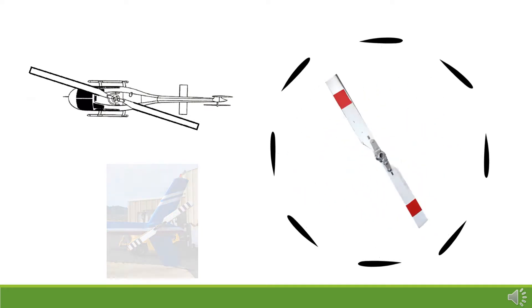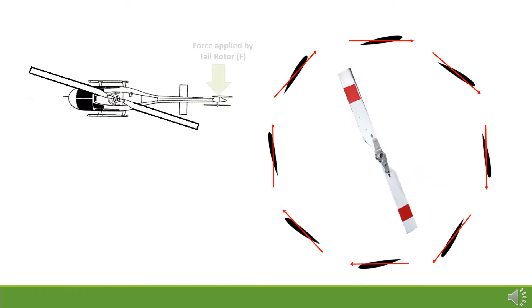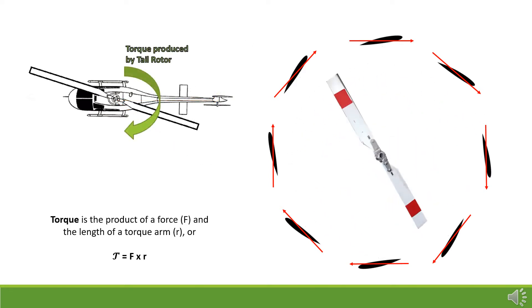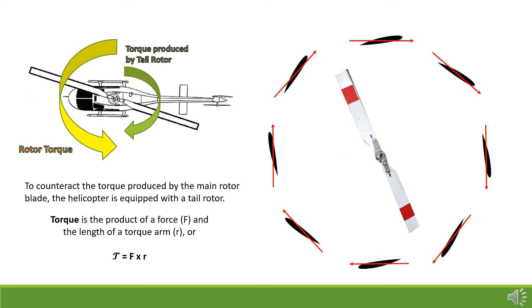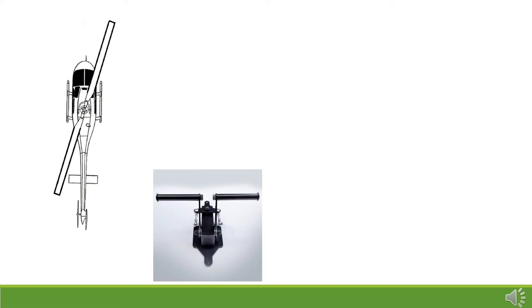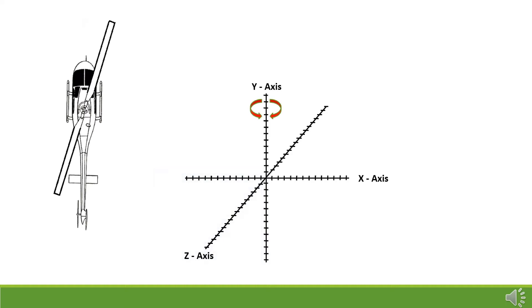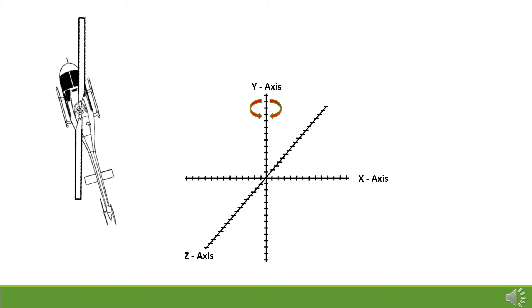The tail rotor is a small propeller mounted so that it rotates vertically or near vertically at the end of the tail of a traditional single rotor helicopter. Its position allows it to develop thrust in a horizontal direction, and as it is placed at a distance from the center of rotation of the main blades, it produces a torque or rotational motion. One of the functions of the tail rotor is to counter the torque effect created by the main rotor. The pitch of the tail rotor blades is adjustable by the pilot via the anti-torque pedals, which allow the pilot to maintain a constant heading or to rotate the helicopter around its vertical Y-axis.